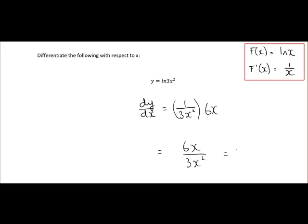If we break that down, 3 into 6 goes twice, 3 into 3 goes once. x into x goes once, x into x² goes x times. So we're left with 2 on the top and x at the bottom. What we did there was we divided above and below by 3x.